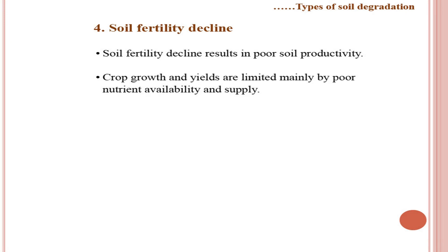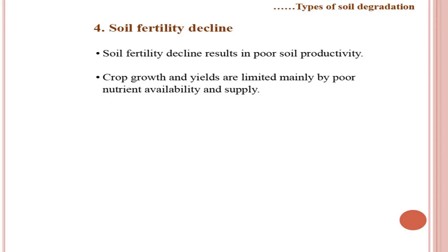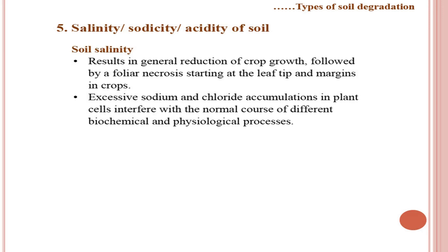Soil fertility decline is also a form of chemical soil degradation, resulting in poor soil productivity. Crop growth and yields are limited mainly by poor nutrient availability. Soil fertility is defined as the inherent capacity of the soil to supply plant nutrients in adequate and balanced amounts for plant growth. Salinity, sodicity, or acidity may also decline soil fertility, reducing the growth and yield of crops.